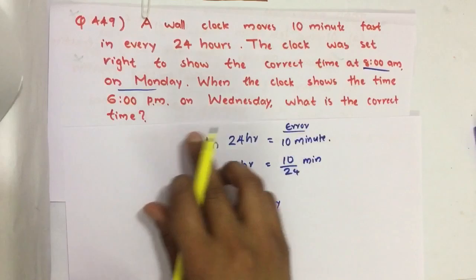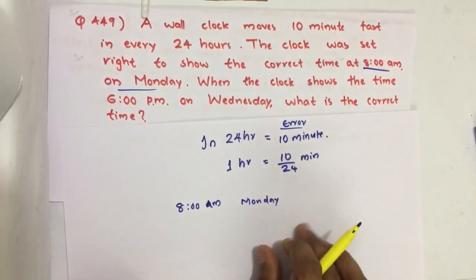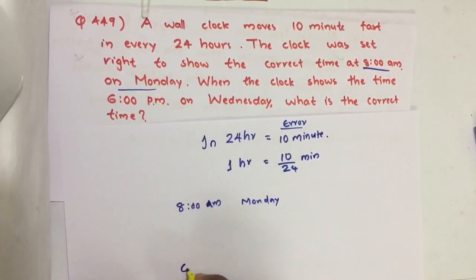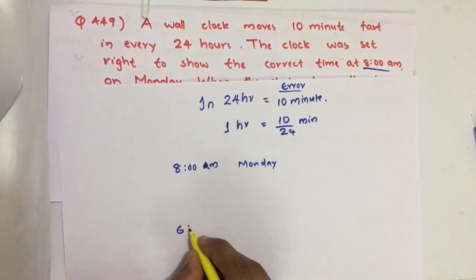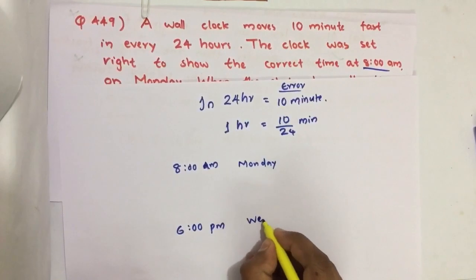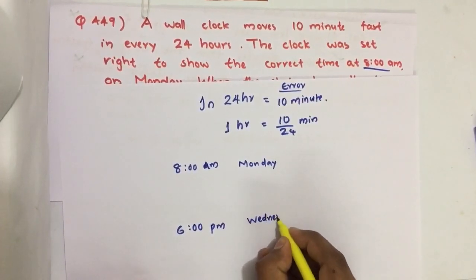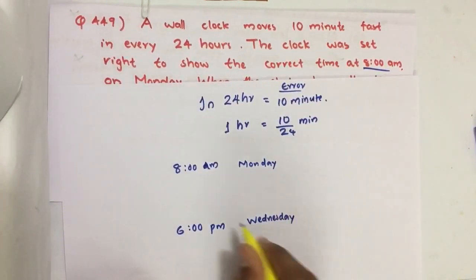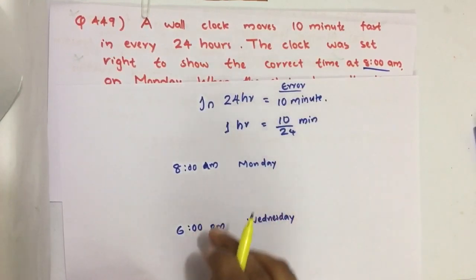When the clock shows 6 p.m. on Wednesday, we have to find what is the correct time at this 6 p.m.